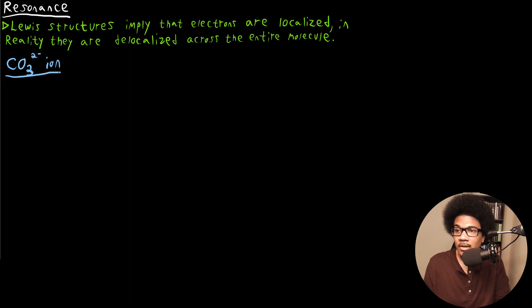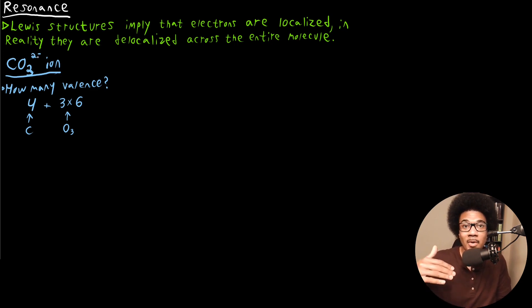So again, to construct the Lewis structure, we want to ask ourselves how many valence electrons are present. So for the carbon atom, we got four valence electrons for that guy. Plus we got three oxygens, and there are going to be six valence electrons for each oxygen. So three times six accounts for the three oxygens.